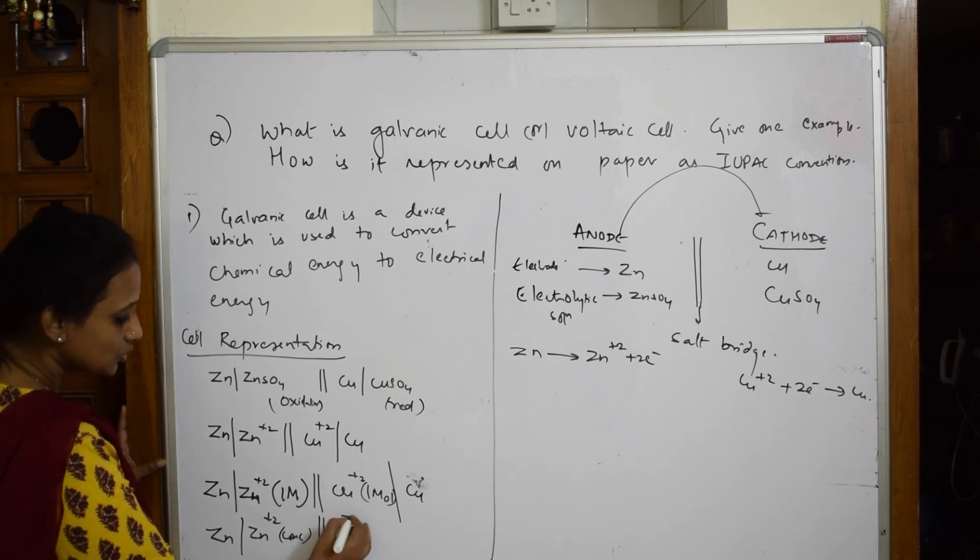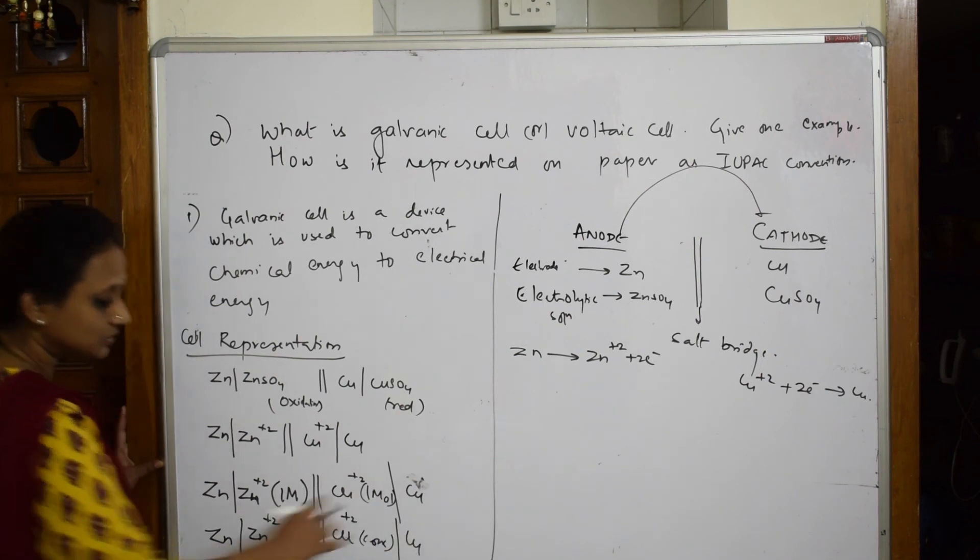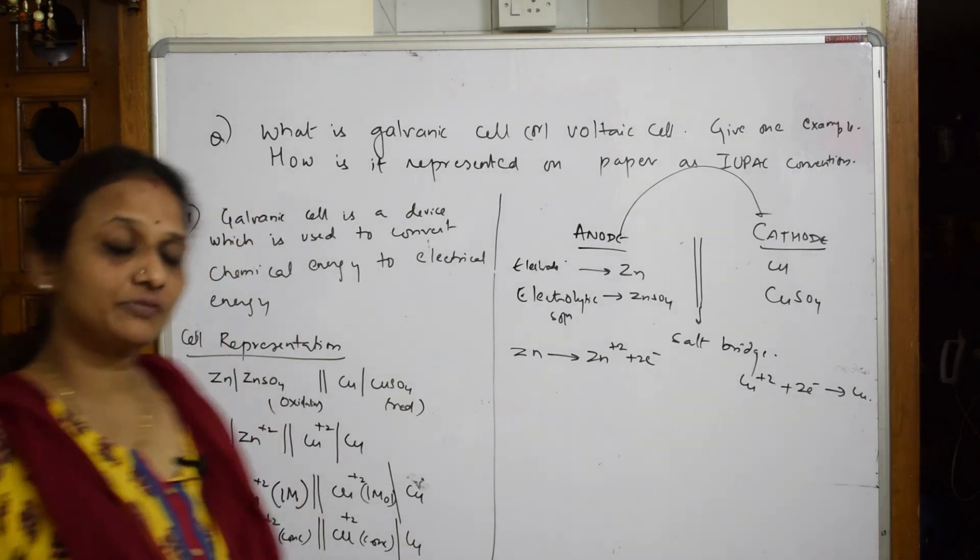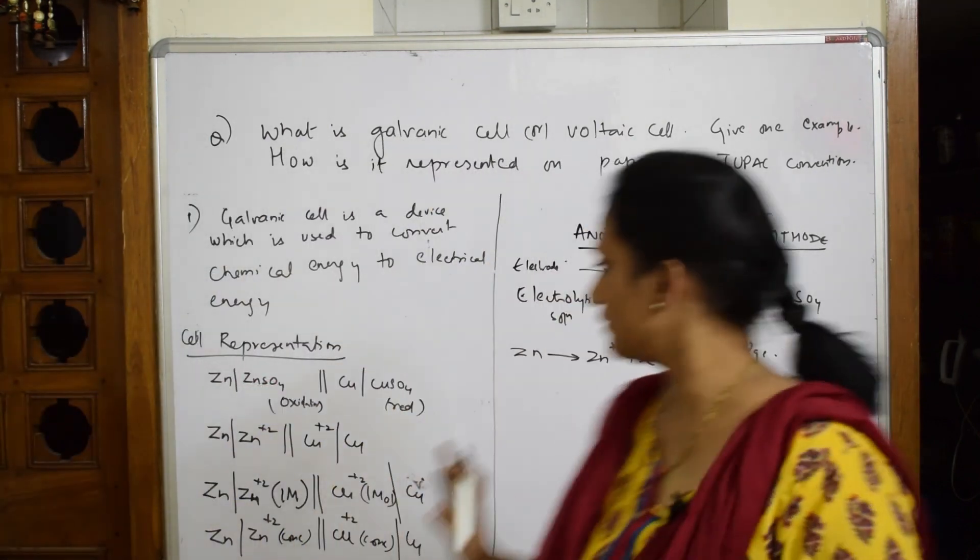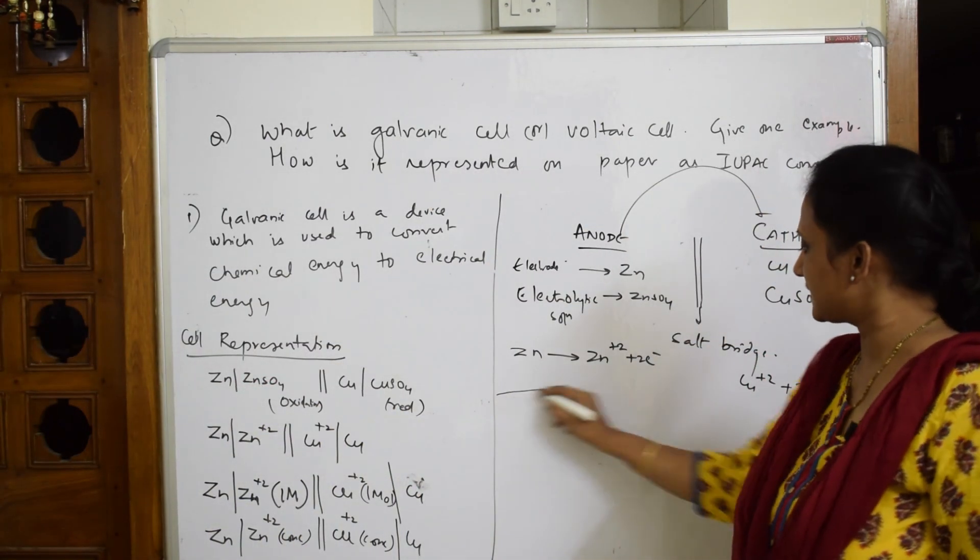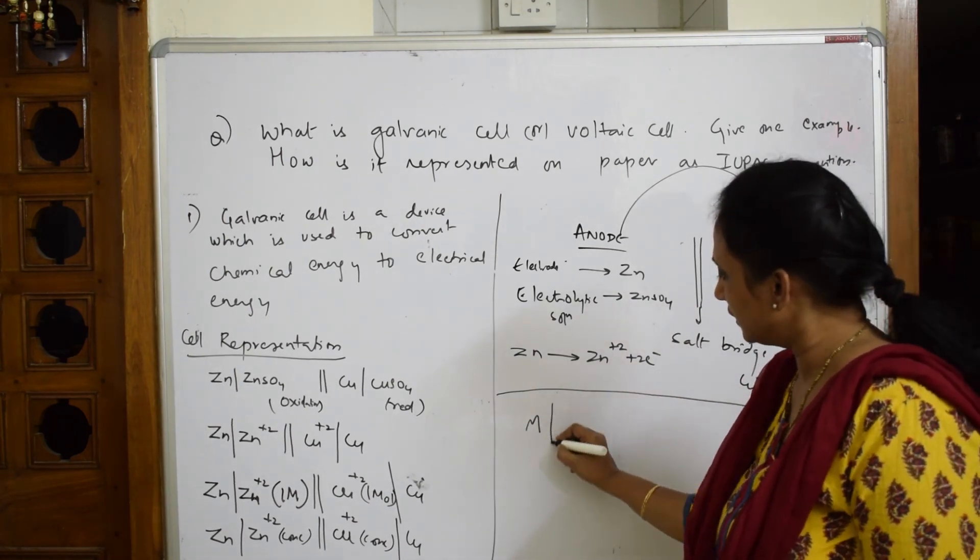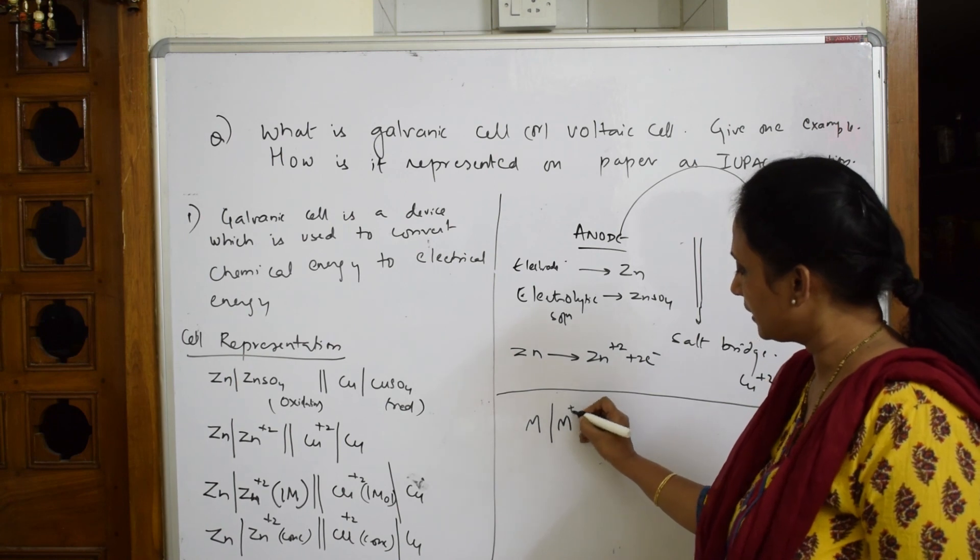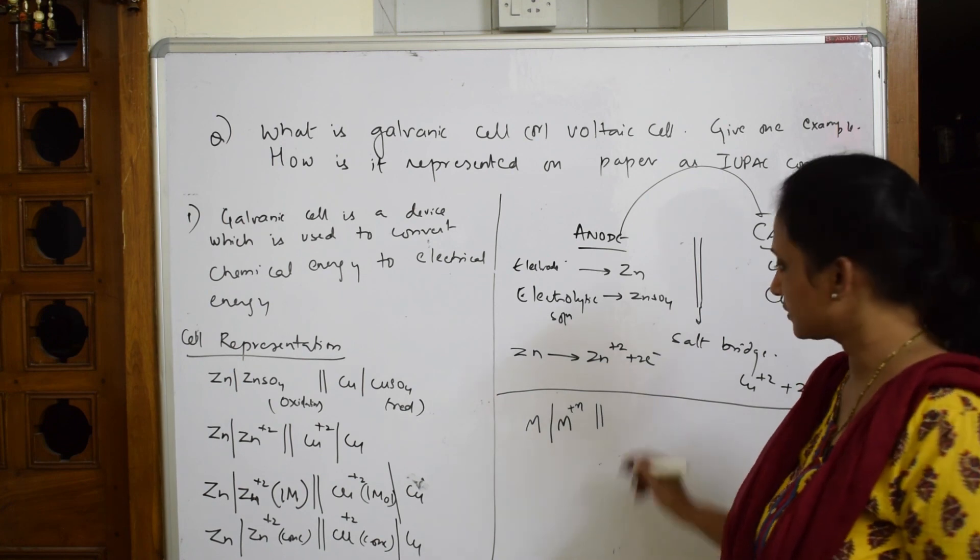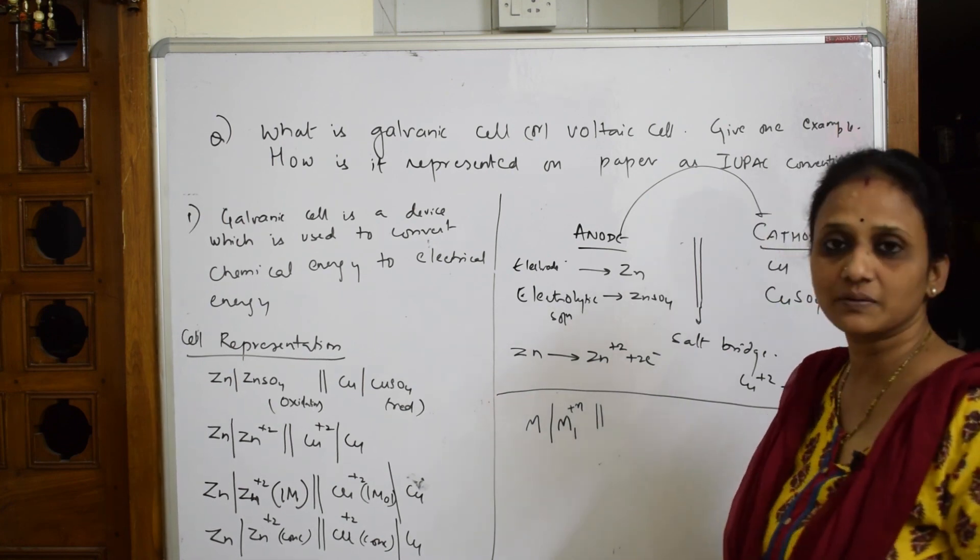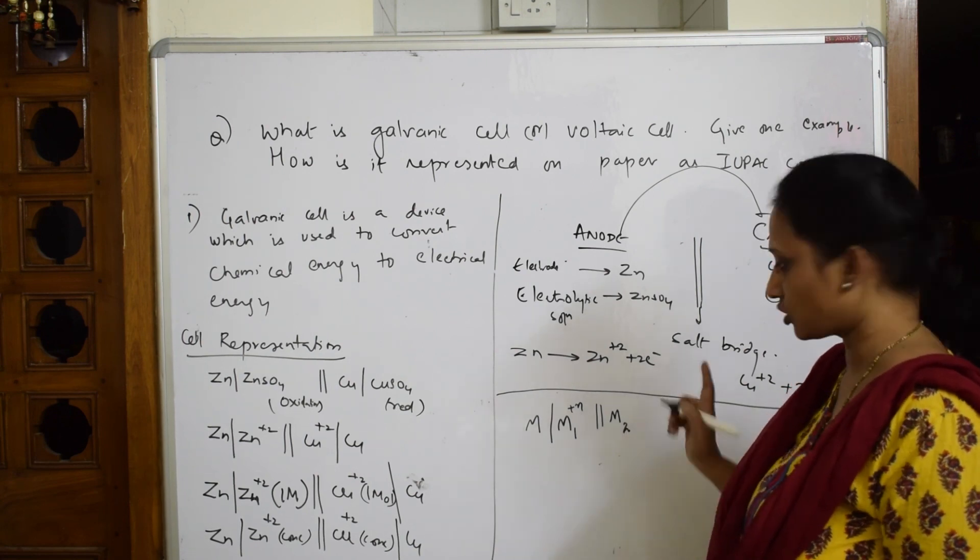Concentration by copper. So these are the different ways of writing, representing the cell notation. Suppose if I have to write generally without any thing, without any example, general reaction. What do I write? M by M⁺ᴺ constant, salt bridge. So let us say this is M₁, then next M₂, the copper.